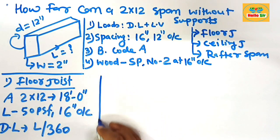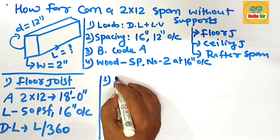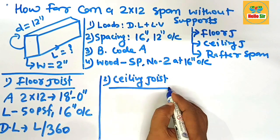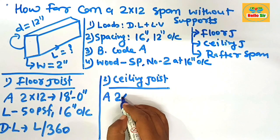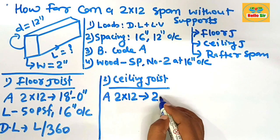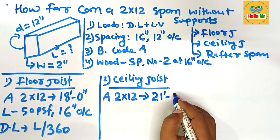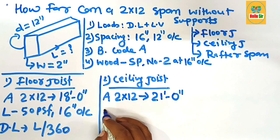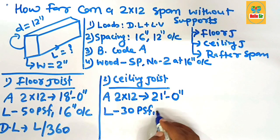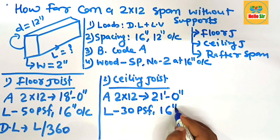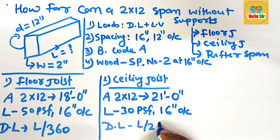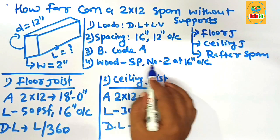The second is the ceiling joist span. What will be the ceiling joist span? A 2x12 dimensional lumber as a ceiling joist can span a maximum distance of 21 feet 0 inches. The conditions are: load should be 30 pounds per square foot, spacing between ceiling joists is 16 inches on center, and deflection limit is L/240, using southern pine number two grade wood.